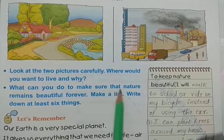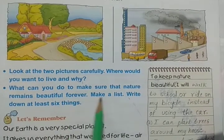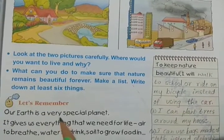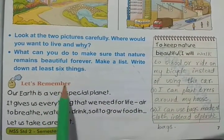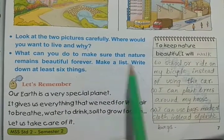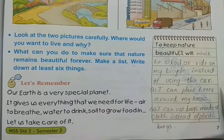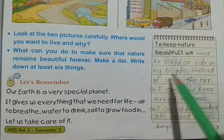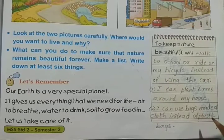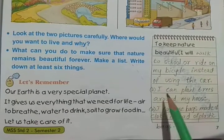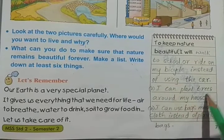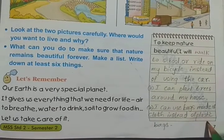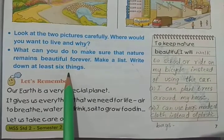What can you do to make sure that nature remains beautiful forever? Make a list and write down at least six things. For example: I will walk to school or ride my bicycle instead of using the car. I can plant trees around my house. I can use bags made of cloth instead of plastic bags. Write six such things.